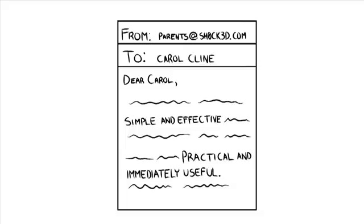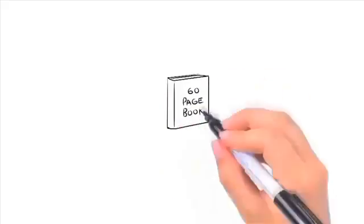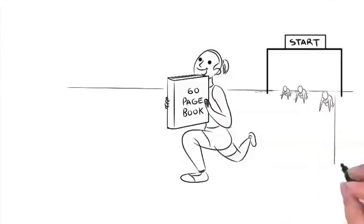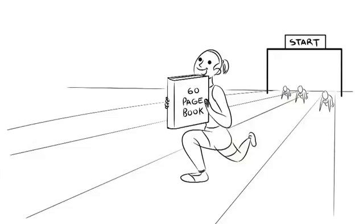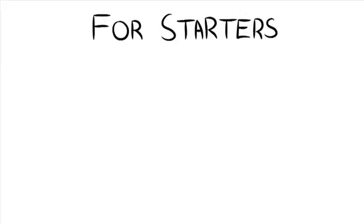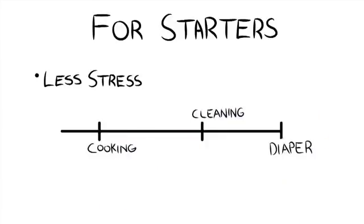I get emails all the time from parents telling me how shocked they were at how simple and effective the information contained in my potty training system was. They literally can't believe how practical and immediately useful it is. Not only that, but it gets right to the point and avoids any and all fluff. Personally, I hate 300-page books that can be summed up in 60 pages or less. I get right to the point. No fluff, no games. I write only meaty, practical, step-by-step information that can be put into action the minute you read it. Just imagine how improved your life will be three days from now when your child is fully potty trained. For starters, you'll have less stress.